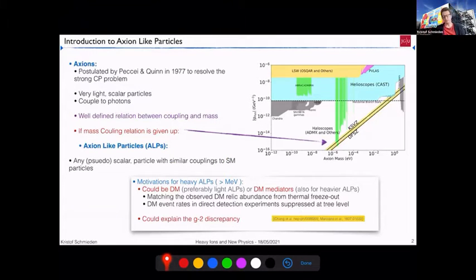Axion-like particles could be any pseudo-scalar particle with similar couplings to standard model particles as axions. But they can be much heavier in particular. And the motivation for heavy ALPs, so with masses larger than MeV, there are two main motivations. One is that it could actually be dark matter. This is preferable for light ALPs, so below in MeV. But it could also be mediators to dark matter. And this is also true for heavy ALPs. And then, which is very interesting in light of the most recent result on g-2, axions or axion-like particles could actually explain the discrepancy seen in the g-2 measurements.